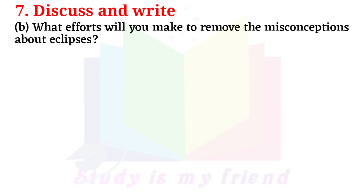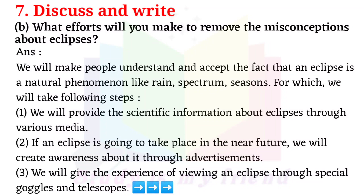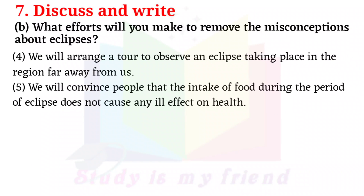B. What efforts will you make to remove the misconceptions about eclipses? Answer: We will make people understand and accept the fact that an eclipse is a natural phenomenon, like rain, spectrum, and seasons. Steps: 1. We will provide scientific information about eclipses through various media. 2. If an eclipse is going to take place in the near future, we will create awareness about it through advertisement. 3. We will give people the experience of viewing an eclipse through special goggles and telescopes. 4. We will arrange a tour to observe an eclipse taking place in a region far away from us.